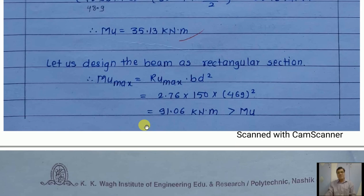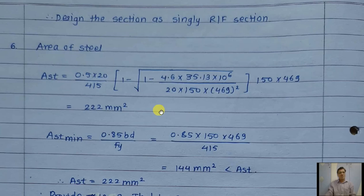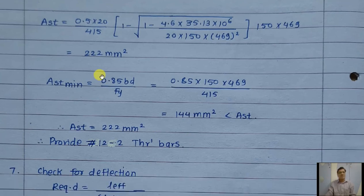The beam is designed as a rectangular section because sunk slabs are present on both sides. The ultimate moment of resistance M_u_R_max = R_u_max × b × d² = 91.06 kN·m, which is greater than M_u, so we design as a singly reinforced section. Using the AST equation with maximum bending moment and effective depth, we get AST = 222 mm². Minimum AST = 0.85bd/fy = 144 mm². Since 222 > 144, we continue with AST = 222 mm².